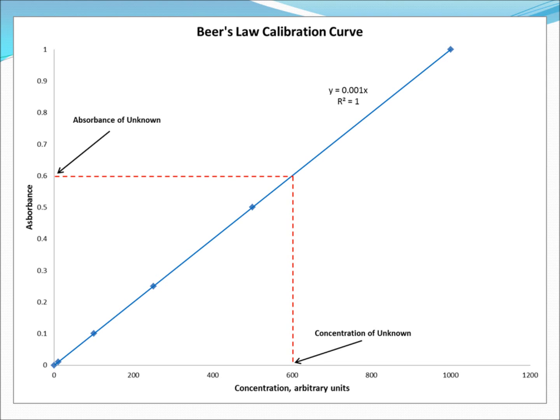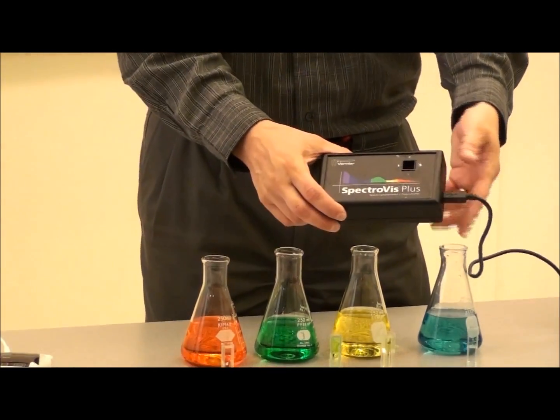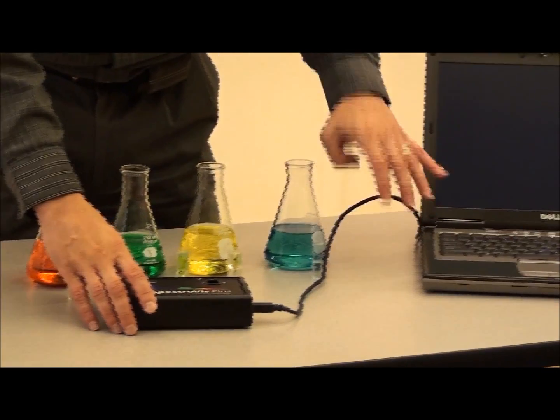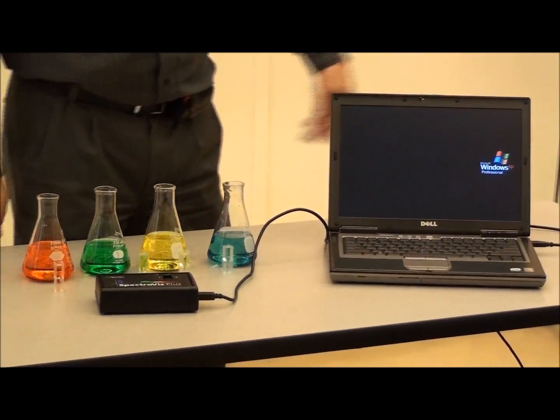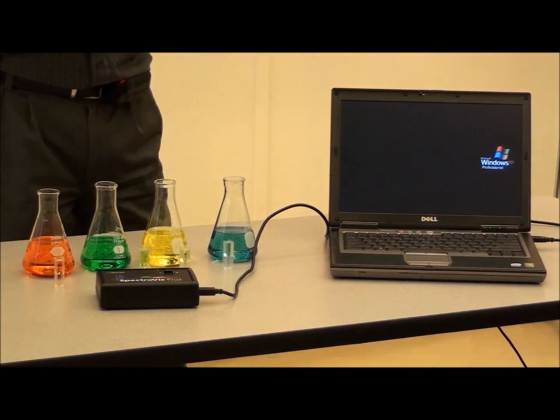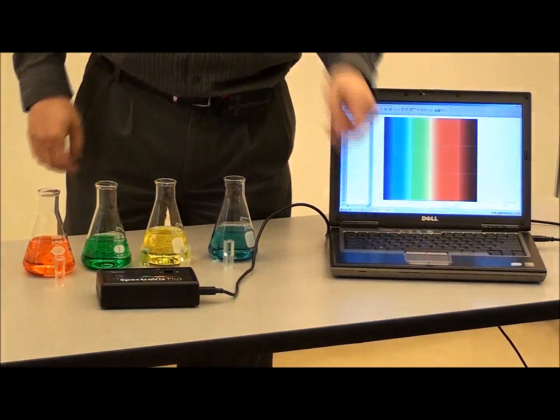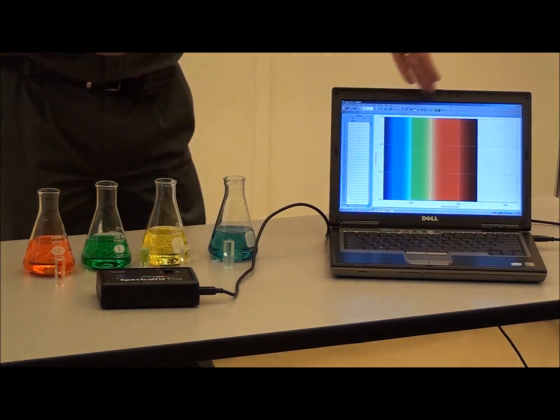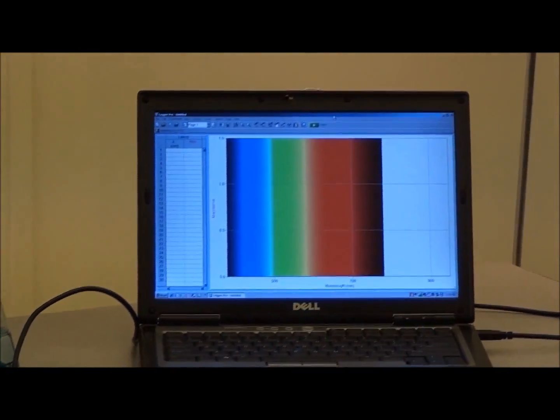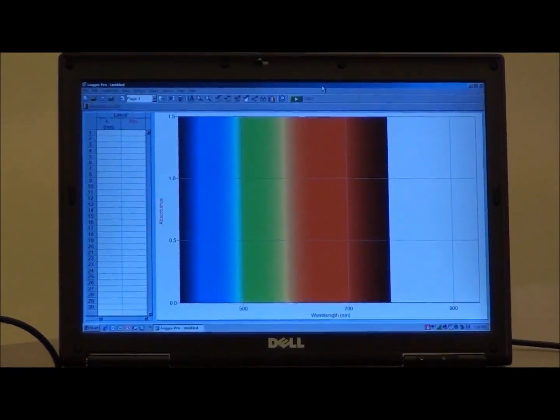It is easy to see that the application of Beer's Law to practical problems is not very involved. Here we have an instrument known as a spectrophotometer, which can easily measure the absorbance of a solution that is contained in a square holder called a cuvette. This particular spectrophotometer is connected to a laptop computer via a USB cable. The computer displays the absorption as a function of wavelength. We have absorbance on the y-axis and the wavelength on the x-axis.